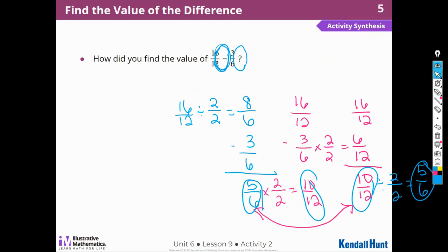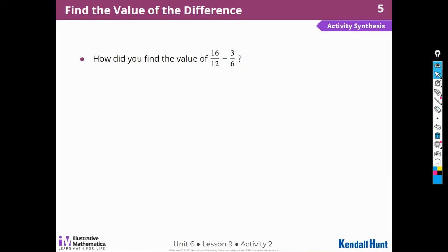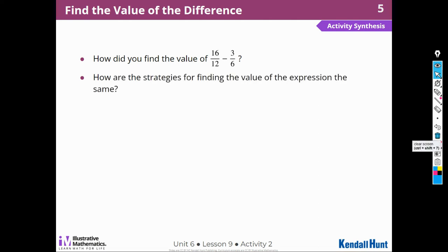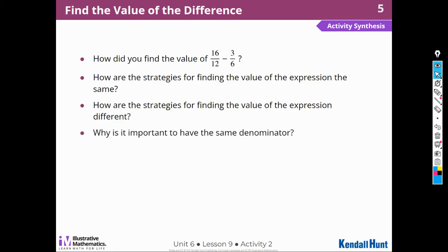Why is it important to have the same denominator? We can only take like from like — I cannot subtract yards from feet unless I convert one into the other. I can subtract yards from yards and feet from feet. I can subtract sixths from sixths or twelfths from twelfths, but I can't subtract twelfths and sixths — they have to be the same.